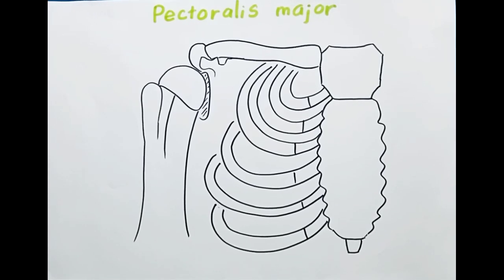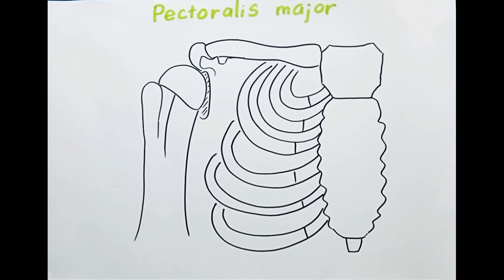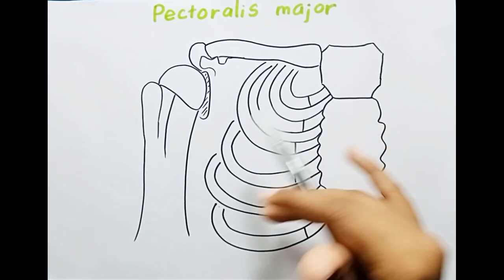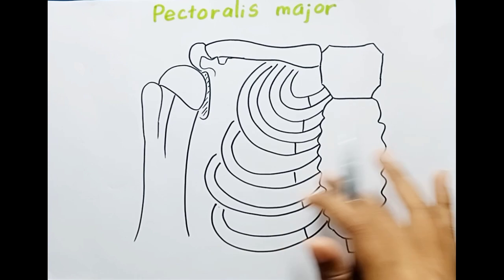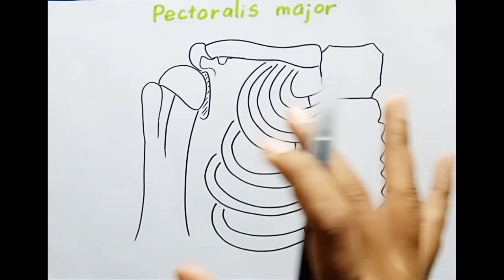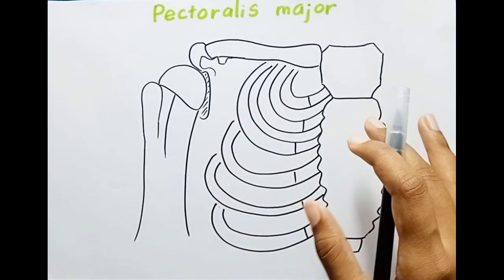Hi guys, welcome to Dr. AI YouTube channel. In this video we are going to talk about pectoralis major. Pectoralis major muscle is the most important muscle in the pectoral region. This is a very strong muscle and is fan-shaped.